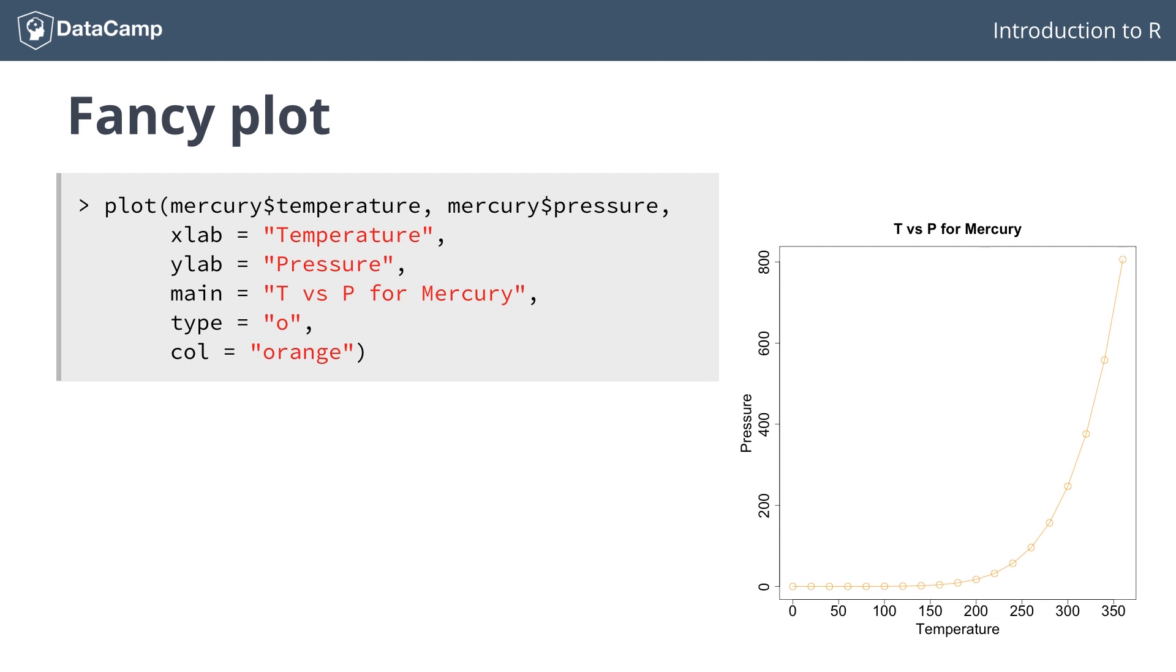xlab and ylab changed the horizontal and vertical axis labels respectively, while main specified the plot title. If you set the type argument to O, you'll have both points and a line through these points on your plot. If you only want a line, you can use type is L, which looks like this.